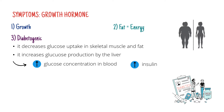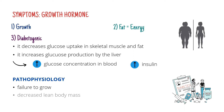So what could happen if there's not enough growth hormone? Obviously the patient is not going to be able to grow, utilizing fat as a source of energy is not going to work — so we'll have decreased lean body mass — and there might be fasting hypoglycemia, meaning low blood glucose levels between meals, since the diabetogenic effect is also not going to work.